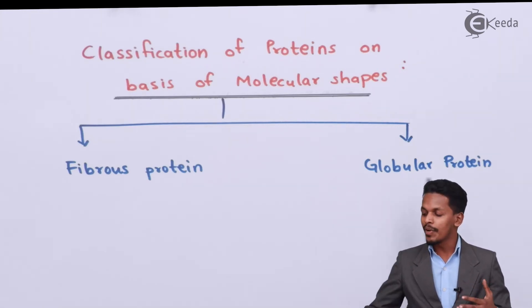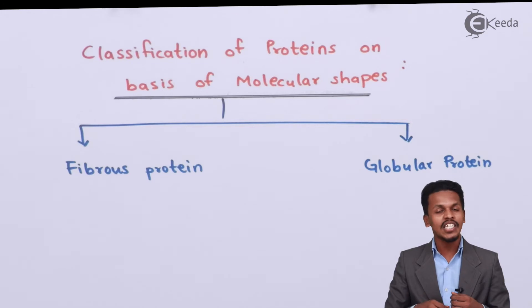Now talking about globular protein. In this case, the peptides fold up in such a way that there is formation of intramolecular hydrogen bonding. This intramolecular hydrogen bonding is weaker compared to the intermolecular hydrogen bonding in fibrous proteins.